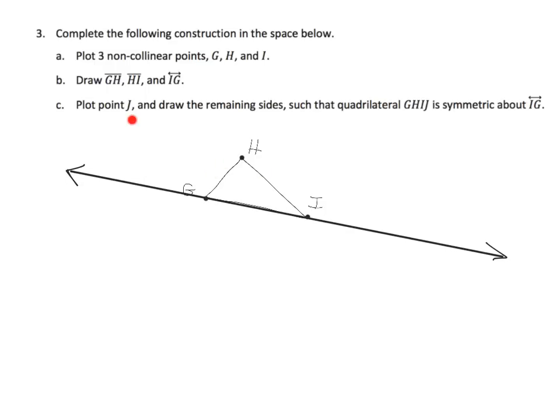So now they're saying plot a J over on this side so that we get a quadrilateral that is symmetric to this line. And so that really means G and I are on the line so really it's only H that we have to really kind of pay attention to. So it's H that is going to be reflected on the other side as point J.